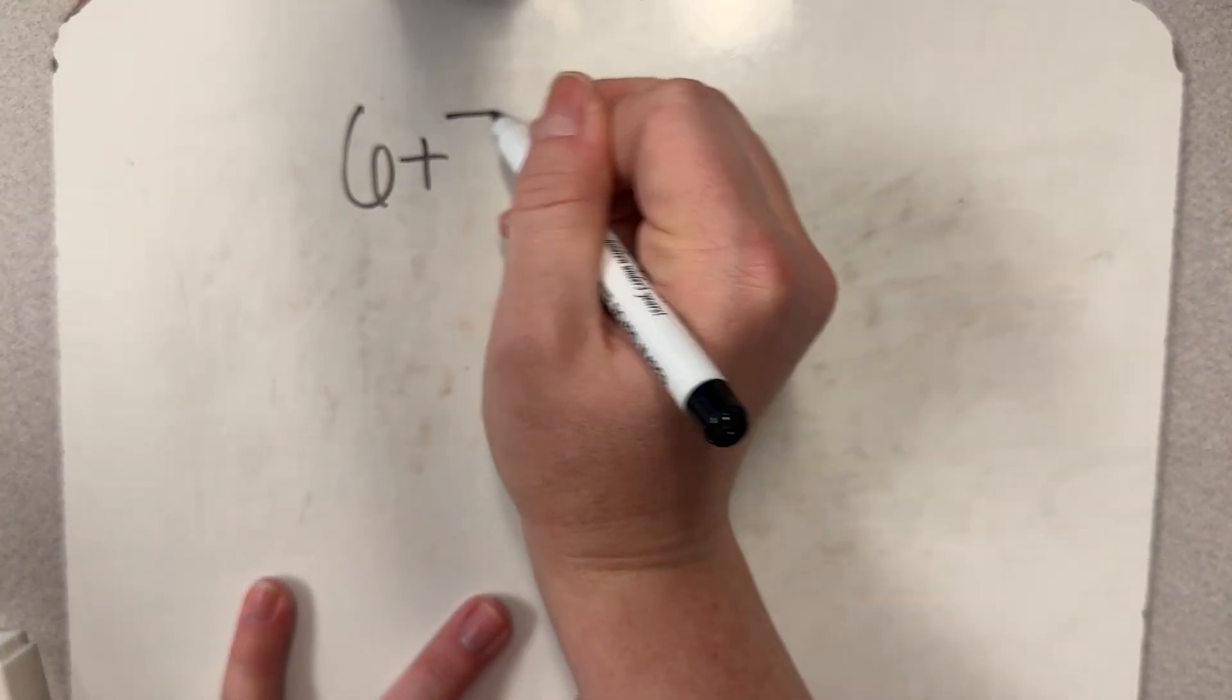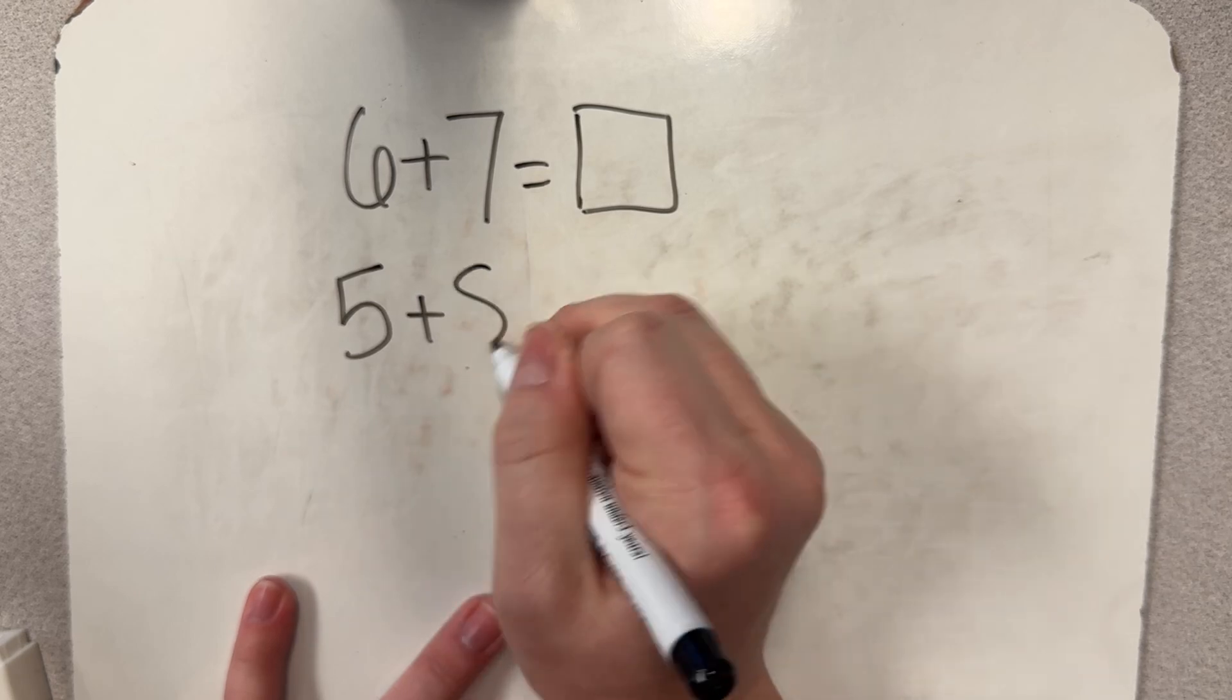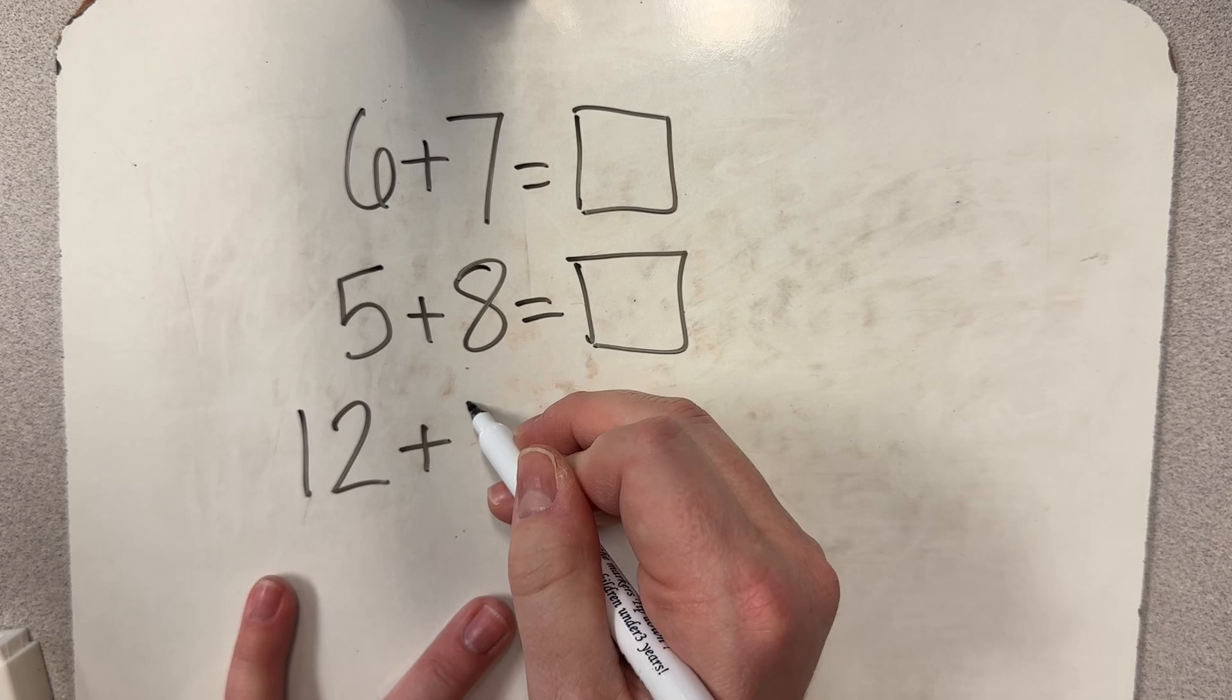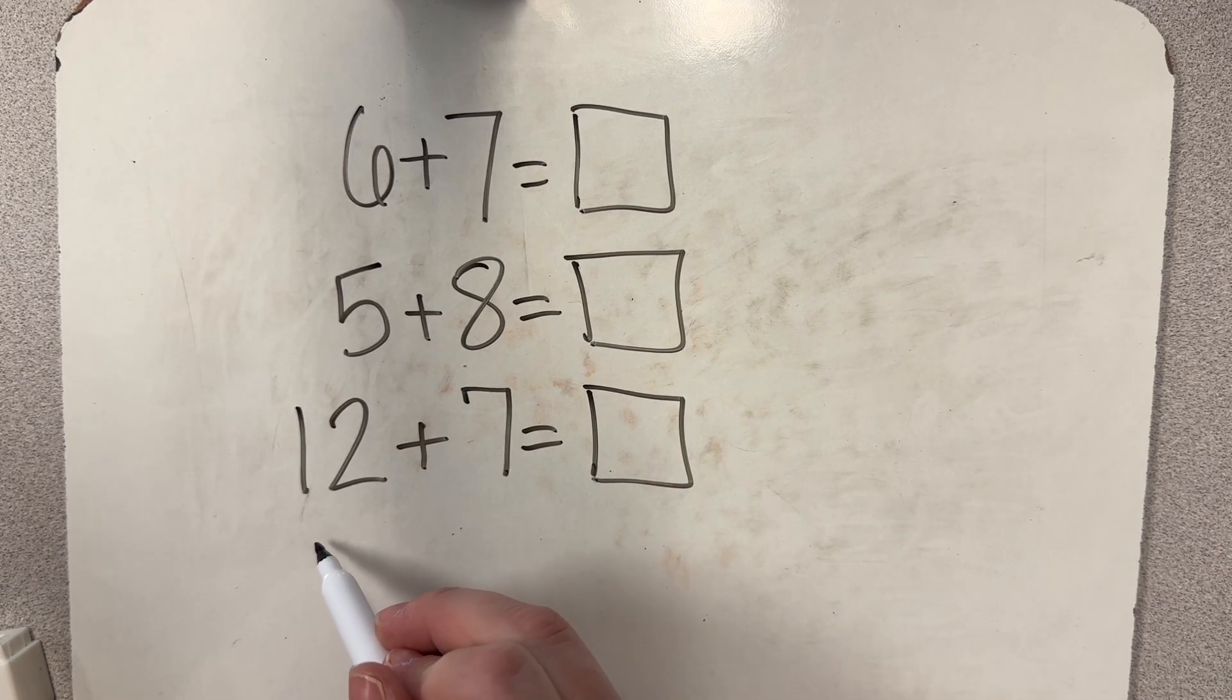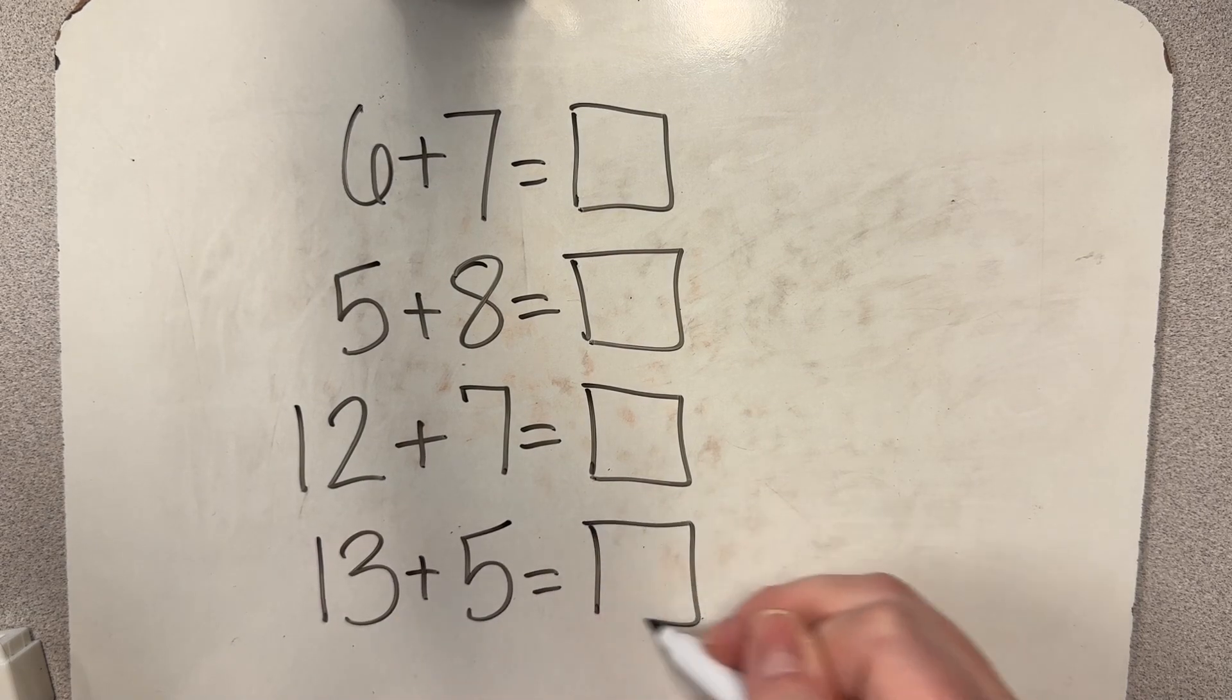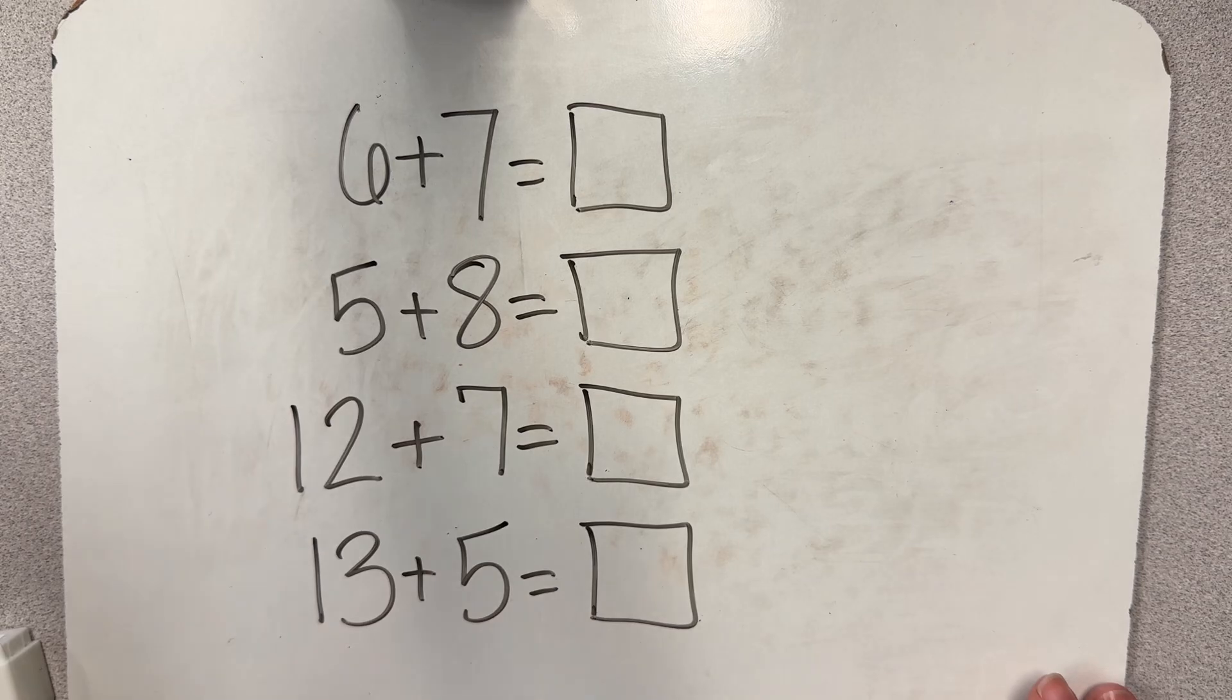Here are some addition problems that you can practice at home. Six plus seven equals our unknown. Five plus eight equals unknown. 12 plus seven equals unknown. And 13 plus five equals unknown. Go ahead and pause the video and try each of those using whichever strategy is best for you, either using tools, a sketch, or number sentences. Then unpause the video and check your answers.